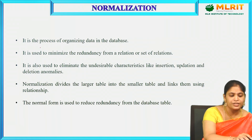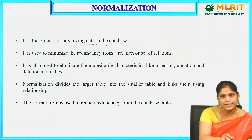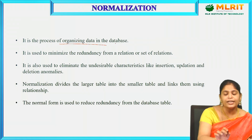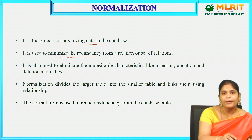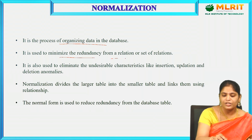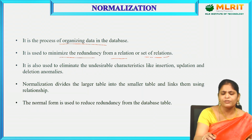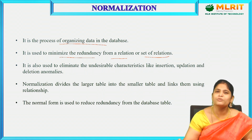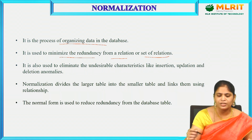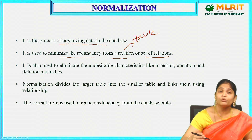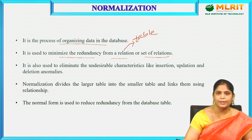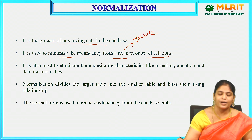What is normalization? It is a process of organizing the data in a database, which is used to minimize the redundancy from a relation or a set of relations. In the context of DBMS, what is a relation? It is nothing but a table — in which we store data in the form of rows and columns.